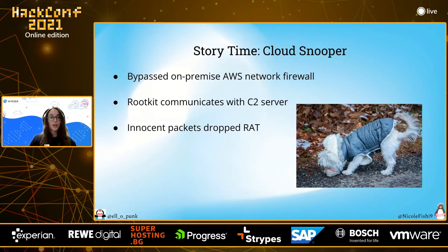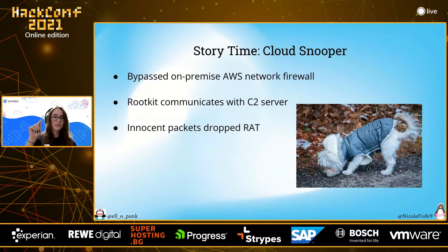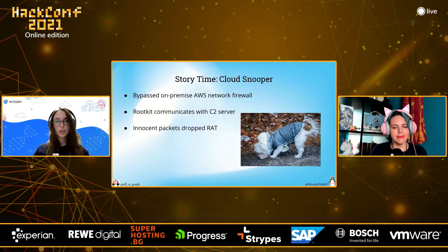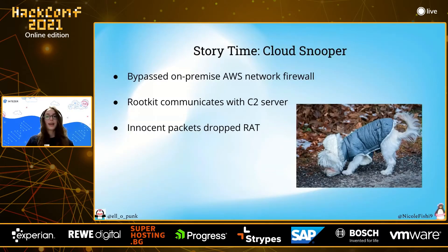Moreover, they were able to drop a rootkit into the system. Based on code analysis, it was based on a rootkit called Cos Ghost — with a zero instead of 'o' — which initially targeted only Windows but ran on Linux machines here. So we see a multi-platform rootkit that shifted from Windows to Linux. A sophisticated threat actor bypassed the well-configured AWS firewall and dropped a multi-platform rootkit.